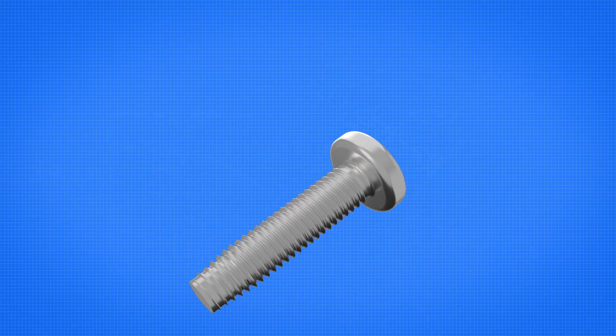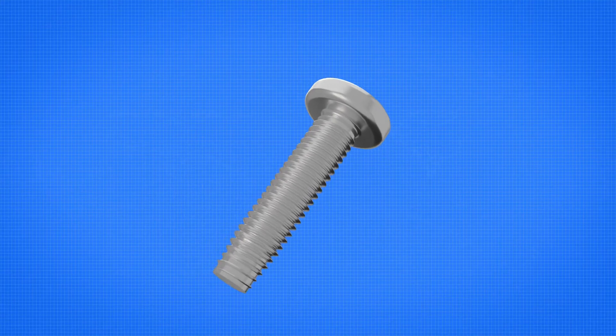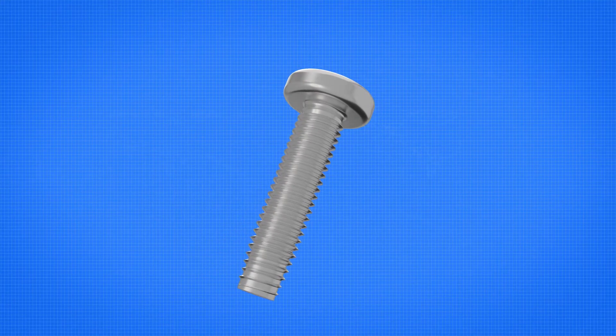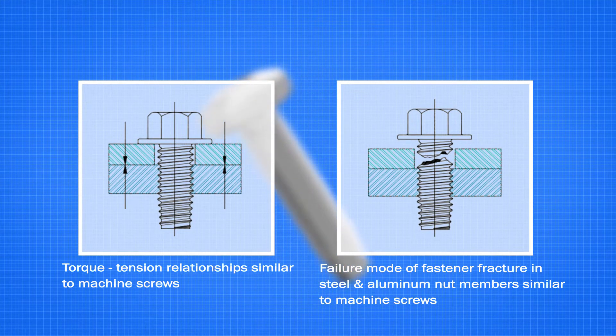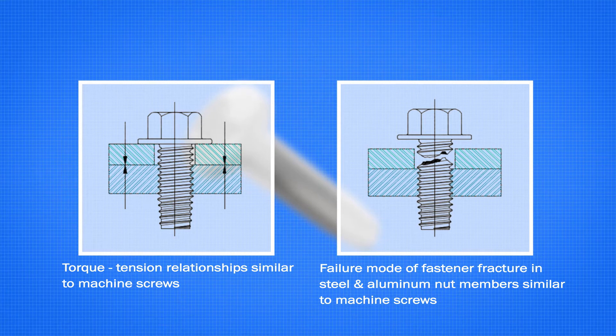Thread-forming fasteners typically require increased length of engagement to achieve fastener fracture as the mode of failure, when compared to an equivalent strength machine screw. Taptide Pro Fasteners achieve this goal in standard depths of engagement, similar to machine screws, avoiding a stripped nut member.